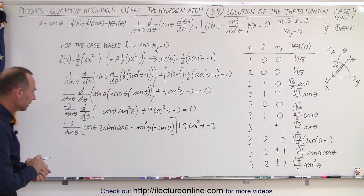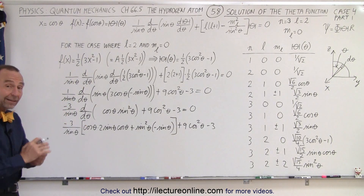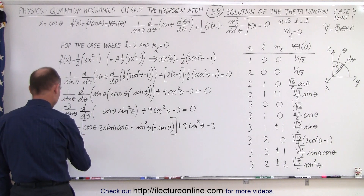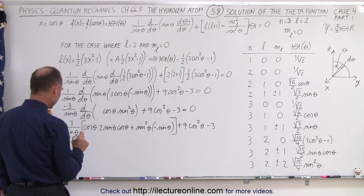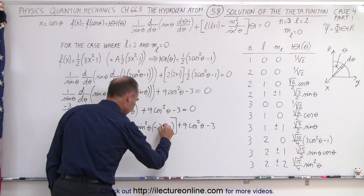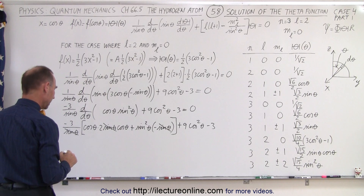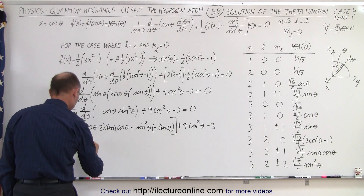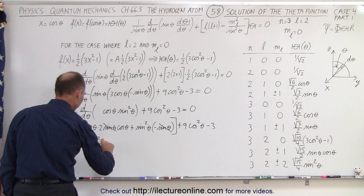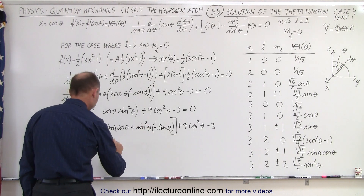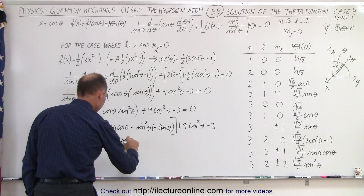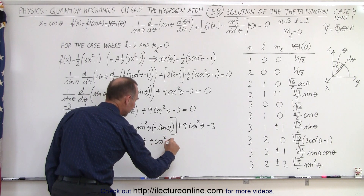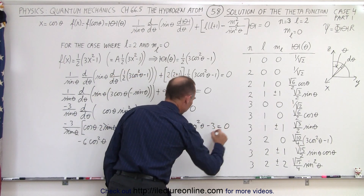Now let's simplify that. The outer sine of theta cancels with the sine factors inside. Multiplying through: minus 3 times 2 gives minus 6 times cosine squared of theta. And minus 3 times the remaining term gives plus 3 times sine squared of theta. Then we still have plus 9 times cosine squared of theta, minus 3, equals 0.